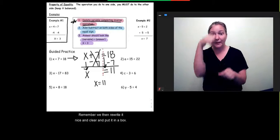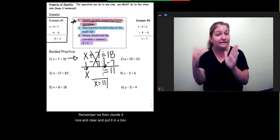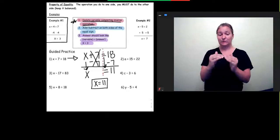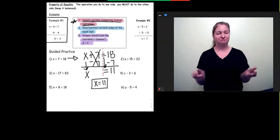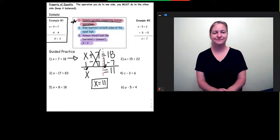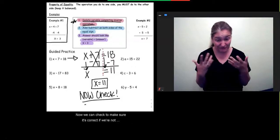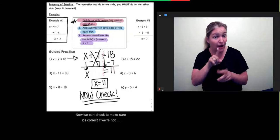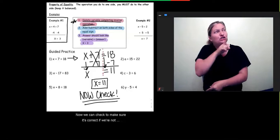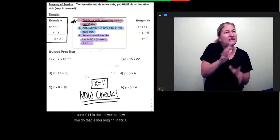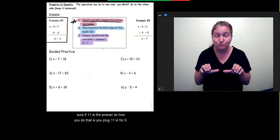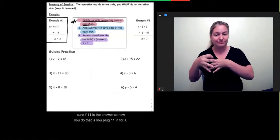Remember, we then rewrite it nice and clear and put it in a box. Now, we can check to make sure it's correct if we're not sure if 11 is the answer. So, how you do that is you plug 11 in for x.